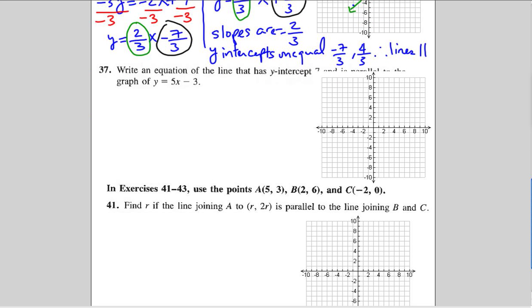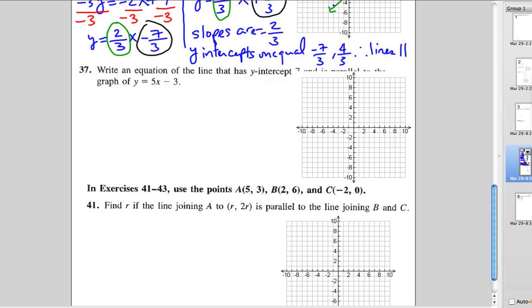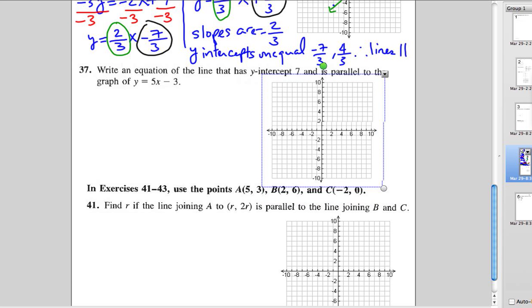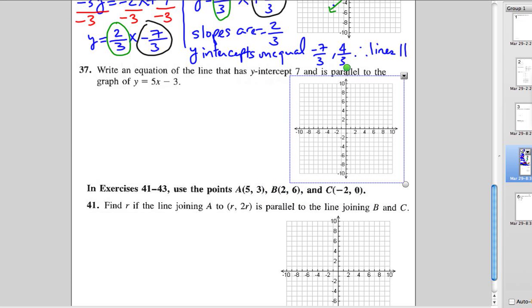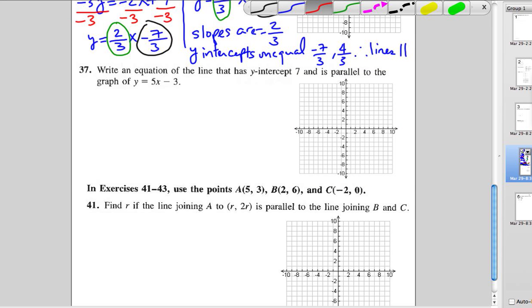Number 37. Write an equation of the line that has the y-intercept of 7 that's parallel to this line with that equation. So first thing we've got to do is find the slope of this line. And the slope of the line, it's already in y equals mx plus b form. So the slope is the number that's multiplied by x. So the slope is 5.